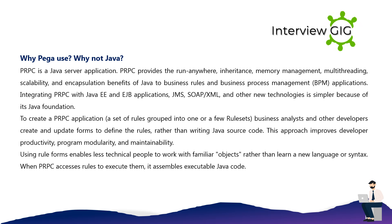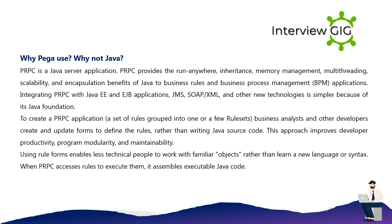Why use Pega instead of Java? PRPC is a Java server application. PRPC provides the run-anywhere, inheritance, memory management, multi-threading, scalability, and encapsulation benefits of Java to business rules and BPM applications. Integrating PRPC with Java EE and EJB applications, JMS, SOAP/XML, and other new technologies is simpler because of its Java foundation.